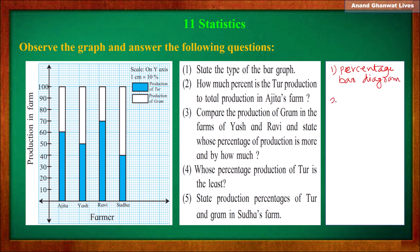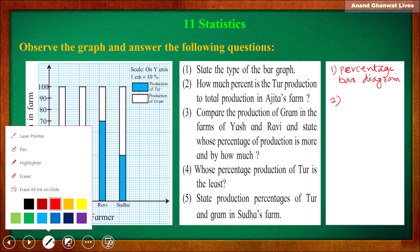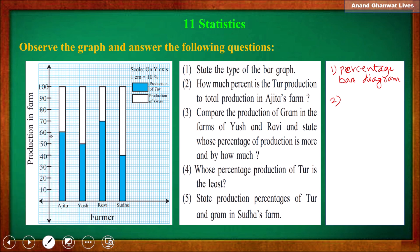Question two: how much percent is the production of tur in the total production of Ajita's farm? In Ajita's farm, 60% is the tur production.